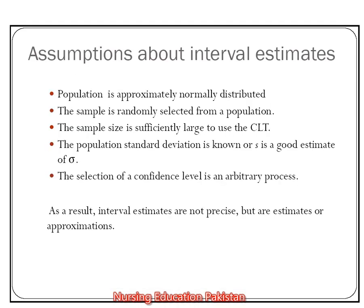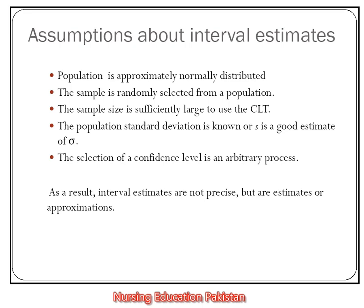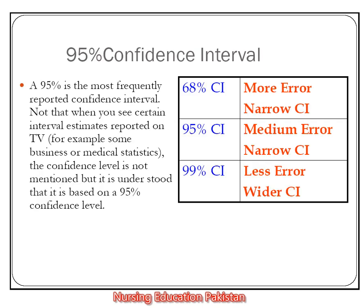For interval estimates, we have some important assumptions: the population is approximately normally distributed; the sample is randomly selected; the sample size is sufficient; and the population standard deviation is known, or the sample standard deviation can be used as a good estimate of it. The selection of confidence level is an arbitrary process by the researcher. Interval estimates are not precise — they are estimates and approximations.